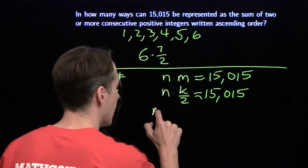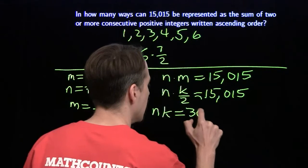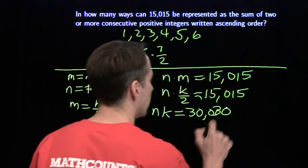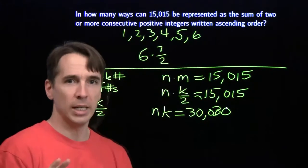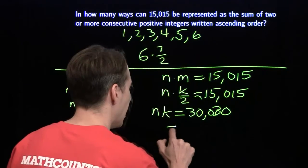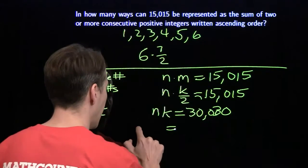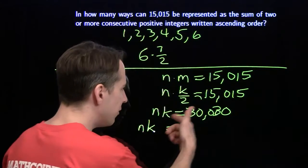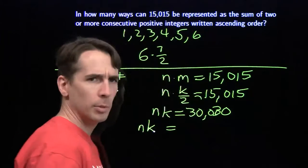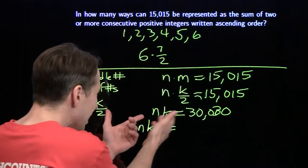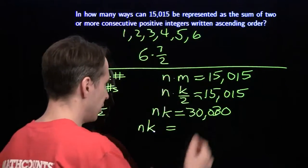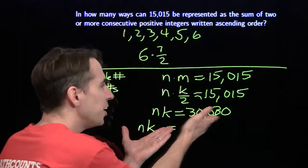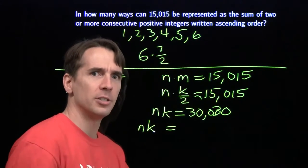Rearranging, N times K equals 30,030. Since N and K are integers, we only have so many options — N and K must be factors of 30,030 that multiply to 30,030. So we need to think about the factors of 30,030, which means finding its prime factorization.